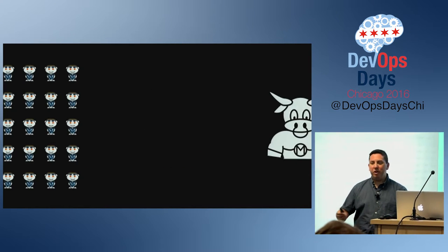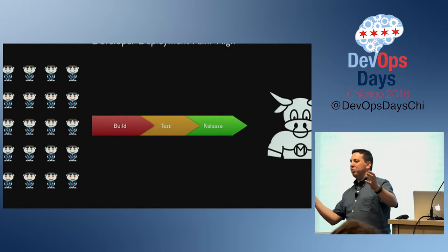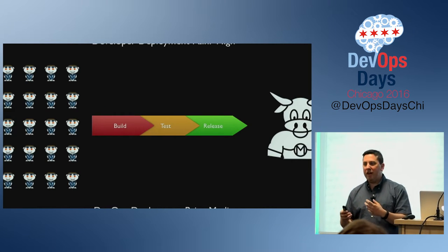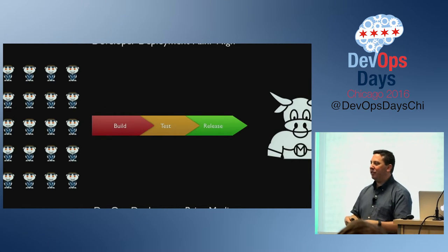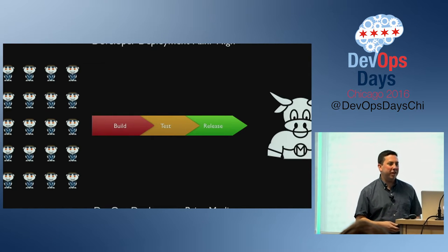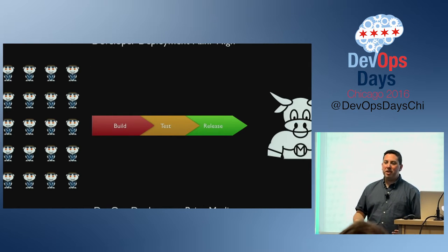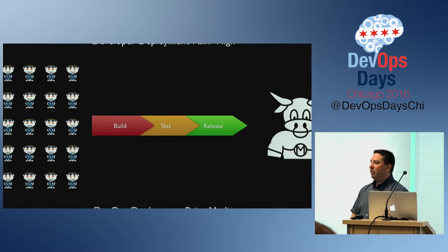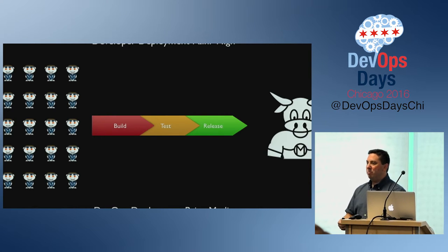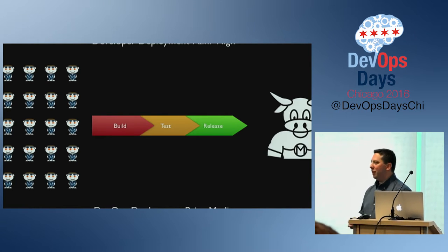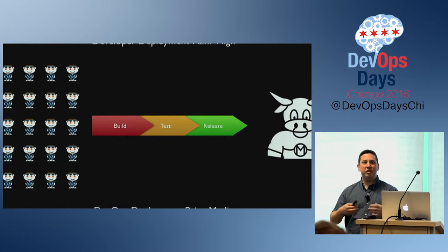Back in the day, you would have your single development pipeline — everybody would check their code in, it would run the tests and deploy. This was great if you had a CI/CD pipeline. It was kind of a pain for developers, but it was great for us who have to manage this stuff because at least it was consistent and you kind of knew what was going to happen.